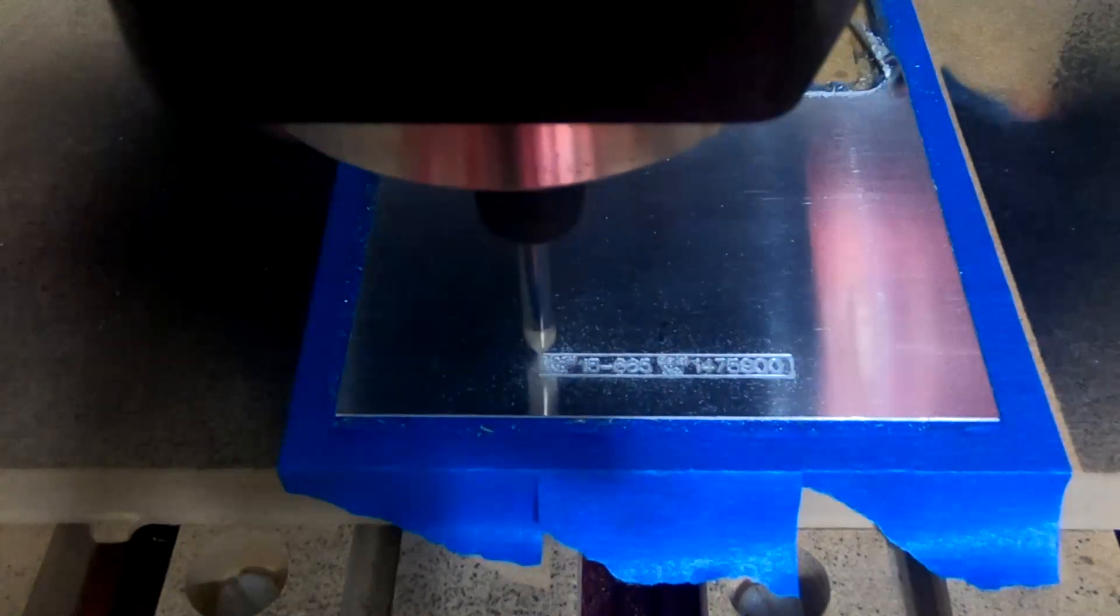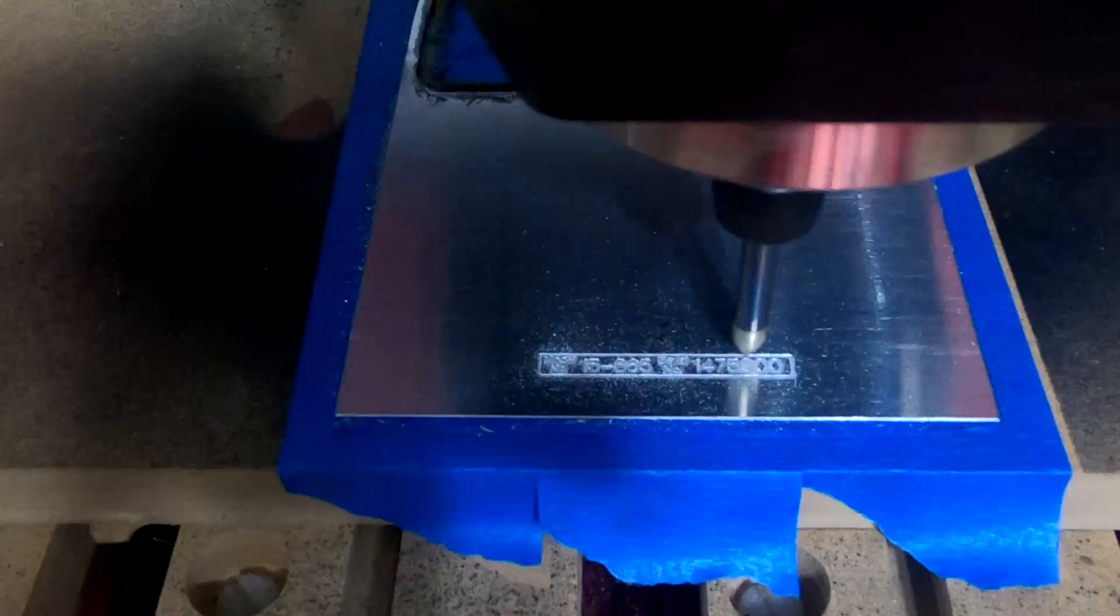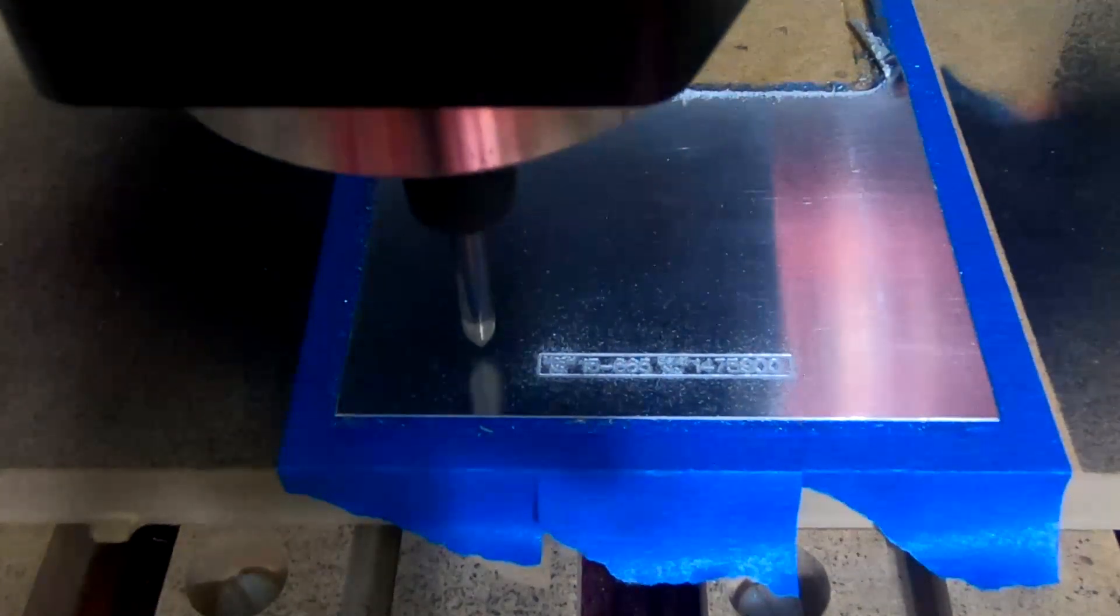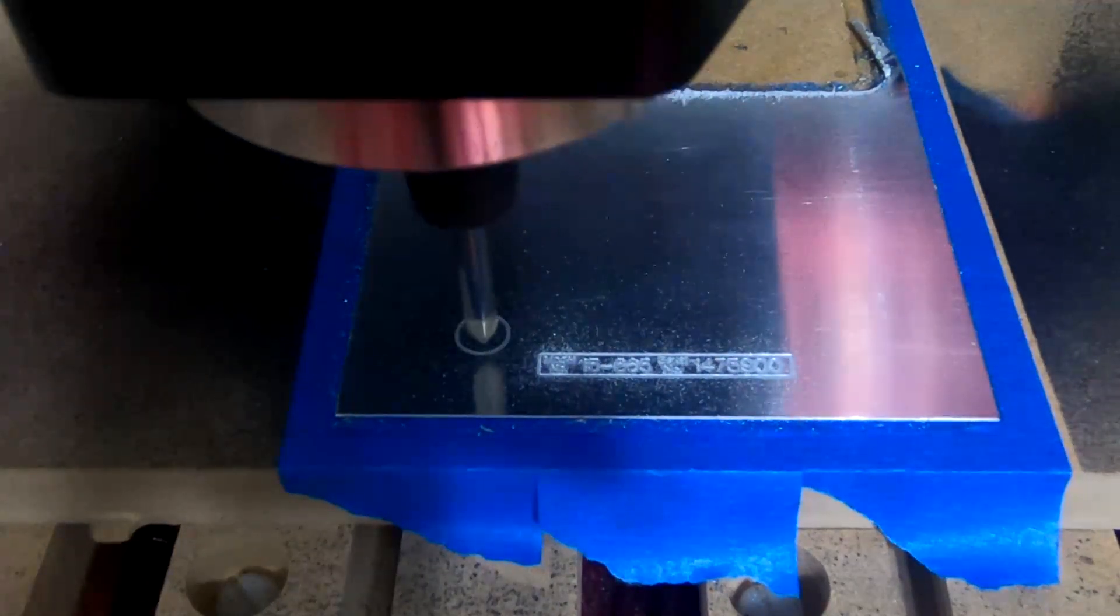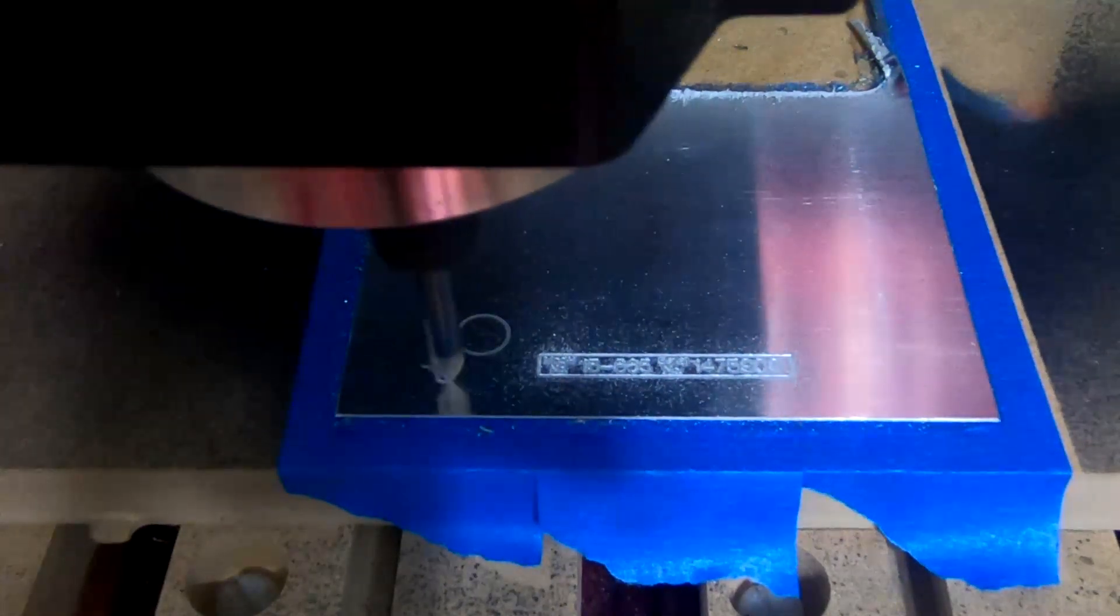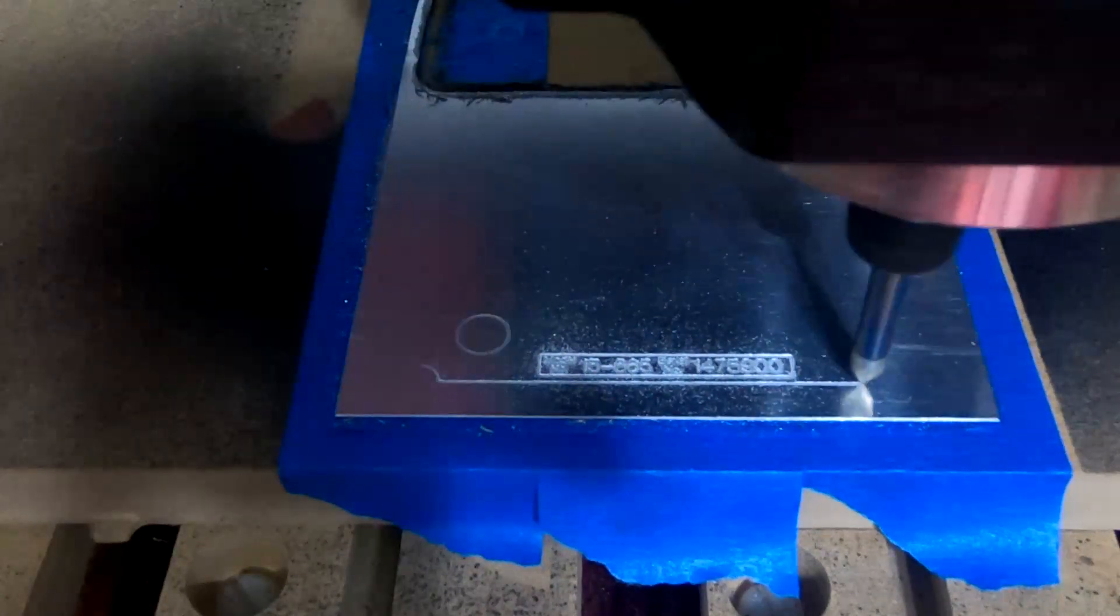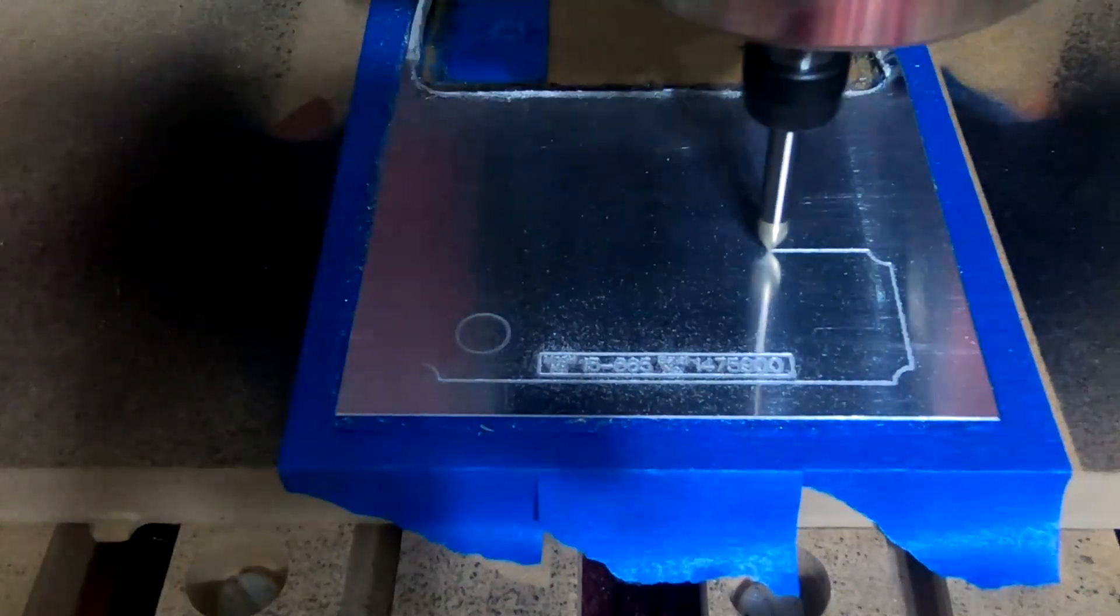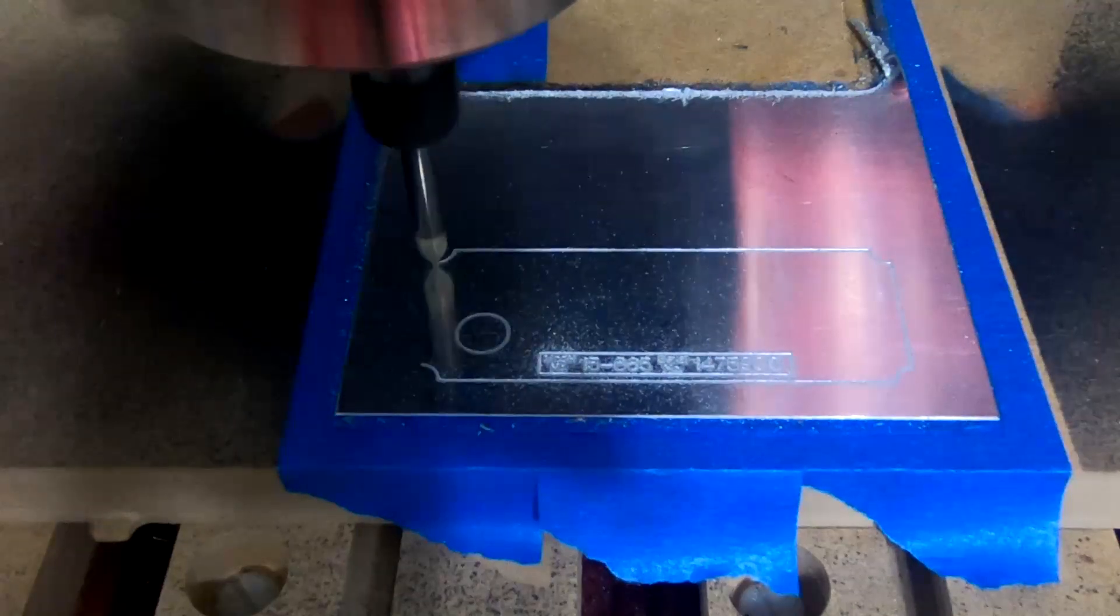But those where it says model number and serial number is about an eighth of an inch or less in height, and it's crystal clear. The reason I didn't do all of this with the diamond drag engraving bit is I wanted a little bit more depth for the paint that we'll be putting on it later. And you'll kind of see what I'm talking about in just a second when we do the engraving inside the circles.